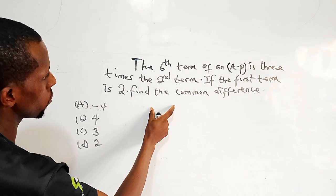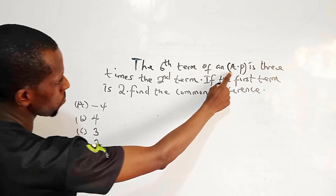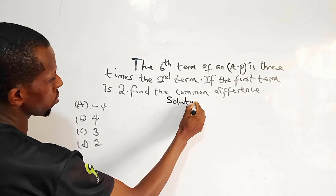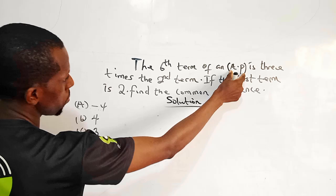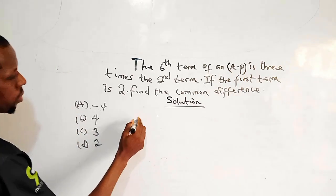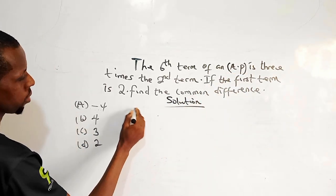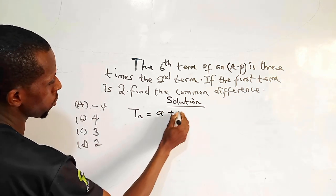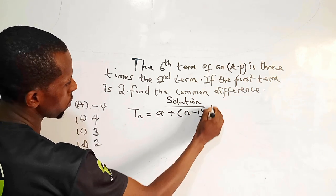Alright, so when we look at this question, we are working with arithmetic progression. Solution: How do we derive AP? And what is the formula for AP? For arithmetic progression, the nth term of an arithmetic progression is given as a plus n minus 1 times d.